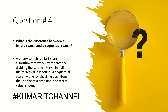Question number four: what is the difference between a binary search and a sequential search? A binary search is a fast search algorithm that works by repeatedly dividing the search interval in half until the target value is found. A sequential search works by checking each item in the list one at a time. For example, in a shipping company, a binary search could quickly locate a package by tracking number, while a sequential search might find all packages delivered on a certain date.